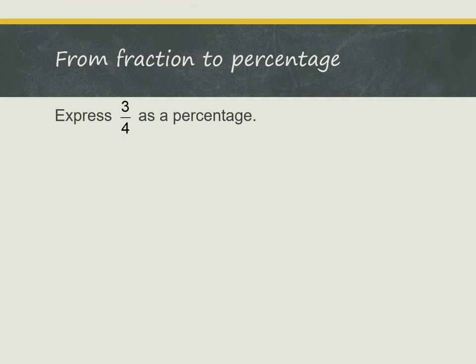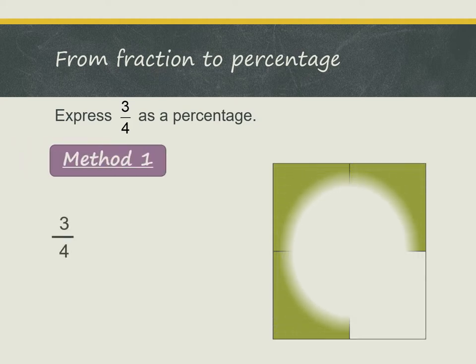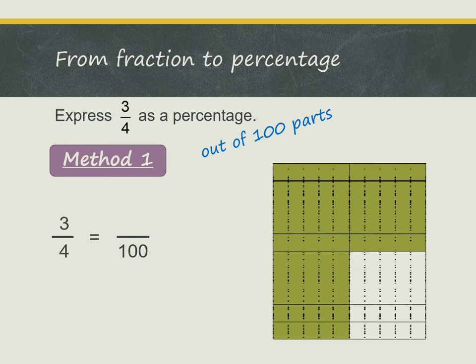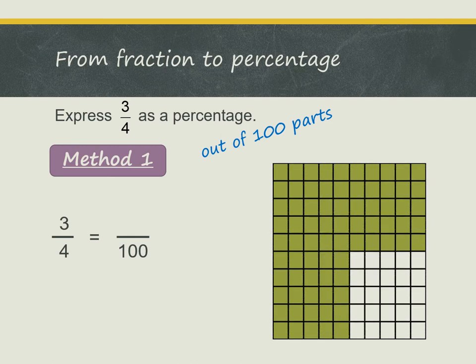Next, let's look at how to convert a fraction to a percentage. Let's look at how to express 3 quarters as a percentage. There are a few methods. In the first method, this is 3 quarters — I have four parts and three parts are shaded. To convert to a percentage, remember that percentage is out of 100 parts, so I need to change the fraction 3 quarters into an equivalent fraction with 100 in the denominator.